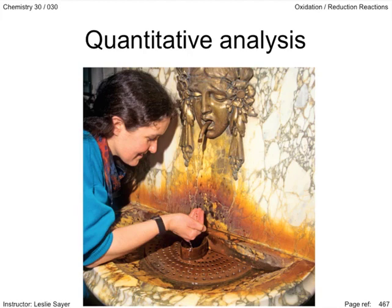In redox titrations, finding the unknown concentration of a reducing agent or an oxidizing agent is useful in a variety of practical situations, such as finding the iron content of drinking water, which has stained the fountain in this picture from your textbook, or the vitamin C content in foods and nutritional supplements.